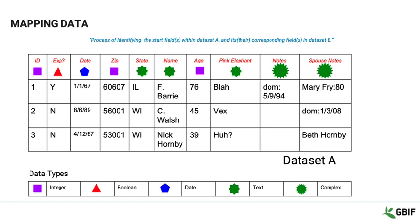First is mapping data. This is the process that you will use to describe how the attributes in your datasets can be transformed into attributes in a different one. Mapping data is the process of identifying the start fields within dataset A and their corresponding fields in dataset B.